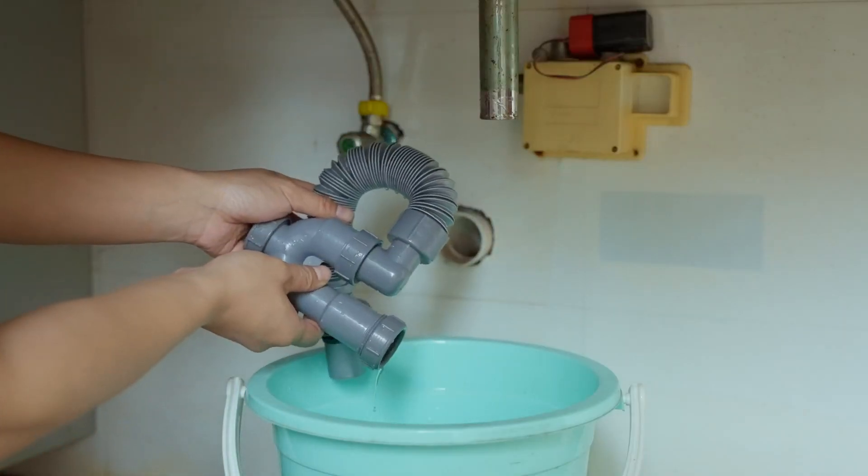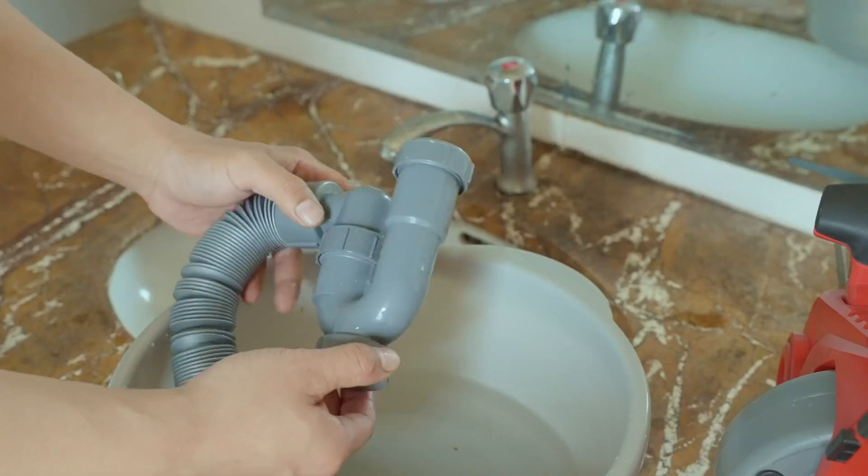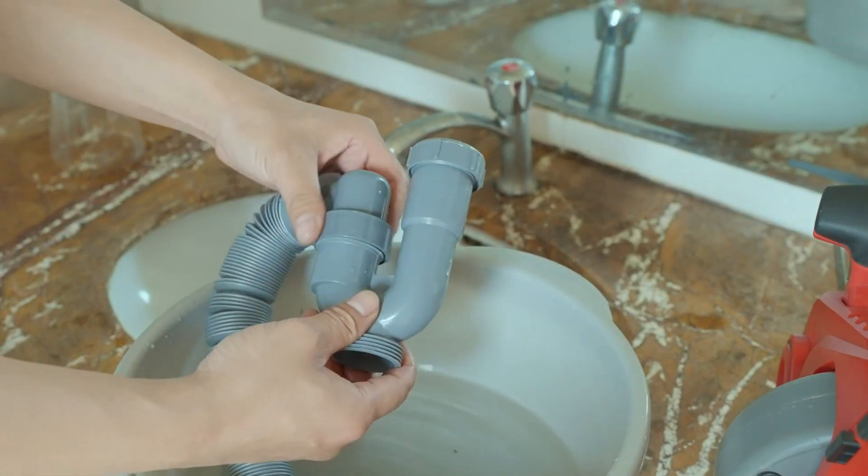Remove the P-trap to see if the clog is located inside. If so, you can use a bent wire hanger to remove the clog.